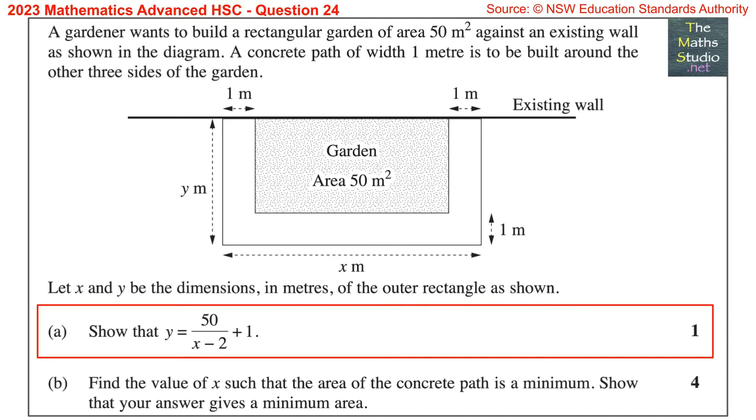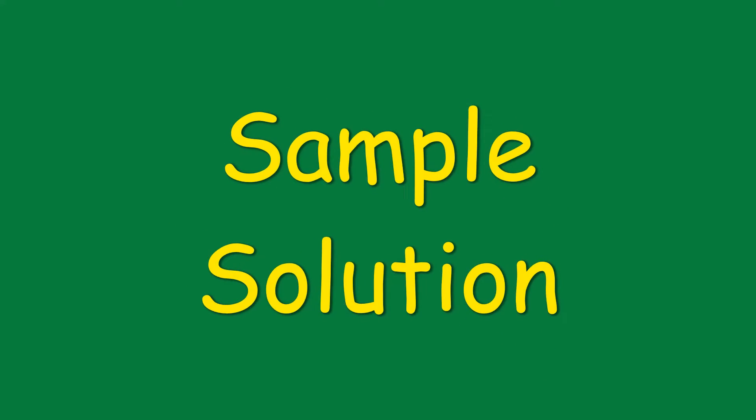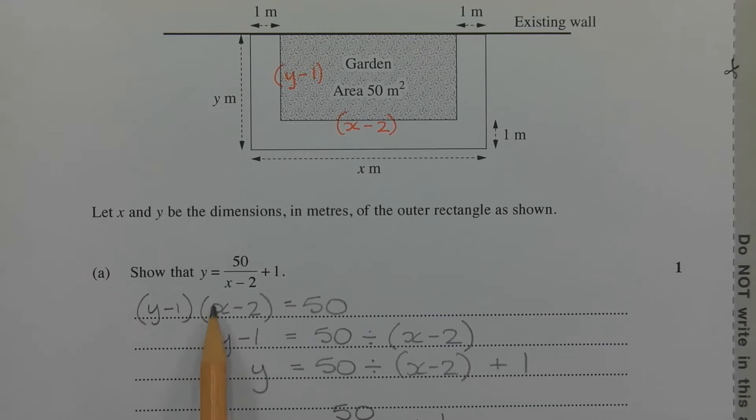Show that y equals 50 over x minus 2 plus 1. Looking at the equation, we have y expressed in terms of x, where y is the subject. Looking at the diagram, what we need to find are the dimensions of the garden area.